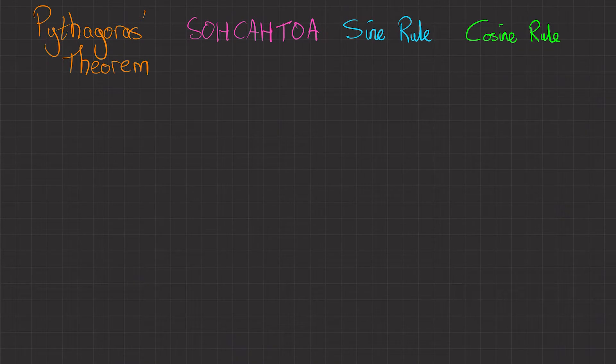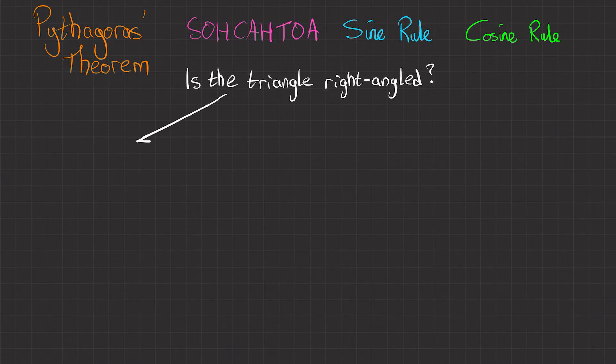In order to figure out which rule to use for all different triangles, I've included Pythagoras' theorem and SOHCAHTOA. So our first question is: is the triangle a right angle?